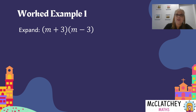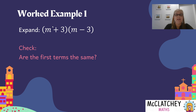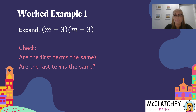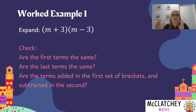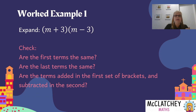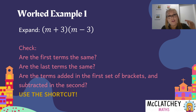Let's look at this with our first worked example. First of all, we're going to check: are the first terms the same? Yes, they are — they're both m's. Are the last terms the same? Yes — they're both the number three. And is there a plus in one set of brackets and a minus in the other set? Yes, there is. So all three criteria are met, which means we can use the shortcut.